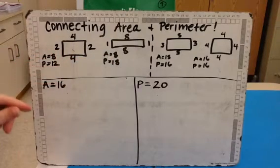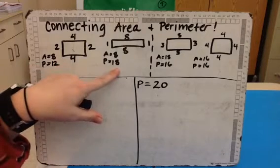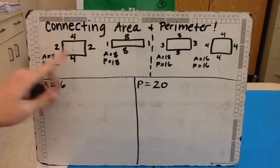But their perimeter is not the same. This one has a perimeter of 12, this one has a perimeter of 18. So same area, different perimeters.